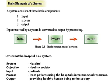Let's see the basic elements of a system. Every system has three basic elements: input, process, and output. Input is received by a system and converted into output through processing. Consider the hospital as a system — the objective is a healthy society, input is patients, process is treating patients using the hospital's interconnected resources, and output is providing healthy human beings to the society. In the same way, you can write input, process, and output for the school system.